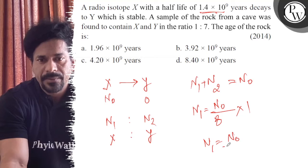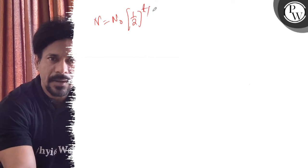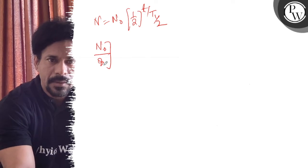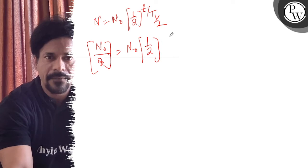Using the decay equation: N equals N0 times (1/2)^(t/t_half). So N0/8 equals N0 times (1/2)^(t/t_half).